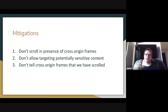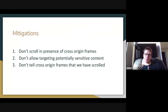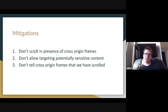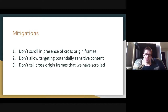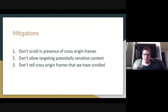This was already a concern with scroll-to-text, but it becomes more of a concern the more power you add to the API. We wanted to talk about how we can limit the ability to observe this. I think this falls into three general categories: disabling the feature in the presence of cross-origin frames; not allowing targeting of potentially sensitive content, which boils down to reducing the power of the selector; and trying to find ways of not letting cross-origin frames know that we have scrolled.